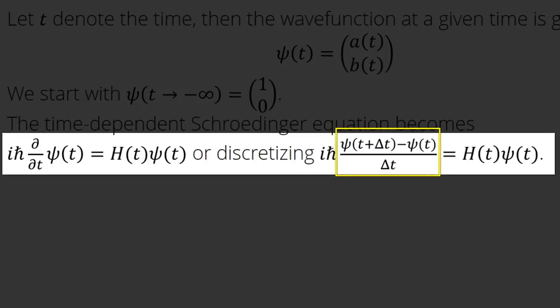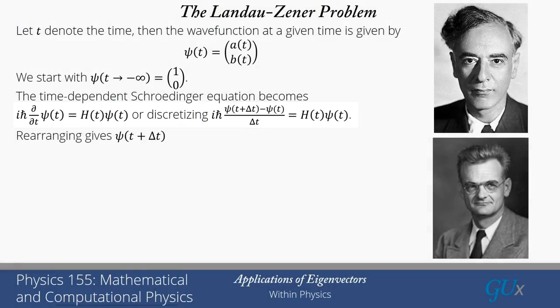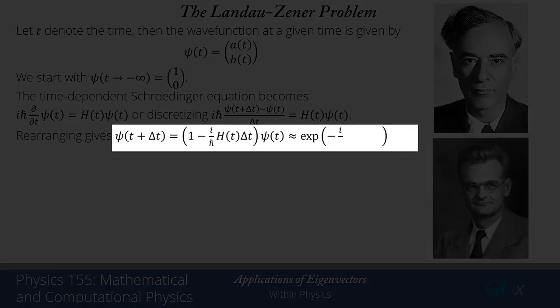We write it as i·ħ times [ψ(t + Δt) − ψ(t)] divided by Δt, where Δt is some fixed constant — we're not taking the limit Δt → 0; that's what it means to discretize. Solving for ψ(t + Δt), we get ψ(t + Δt) = [1 − (i/ħ)·H(t)·Δt]·ψ(t). Now, 1 − (i/ħ)·H(t)·Δt, in the limit where Δt is very small, is the same as the exponential of −(i/ħ)·H(t)·Δt, and so we replace that with the exponential.